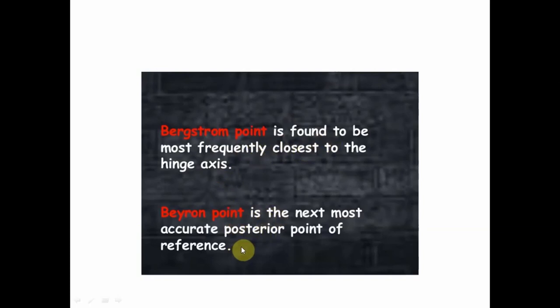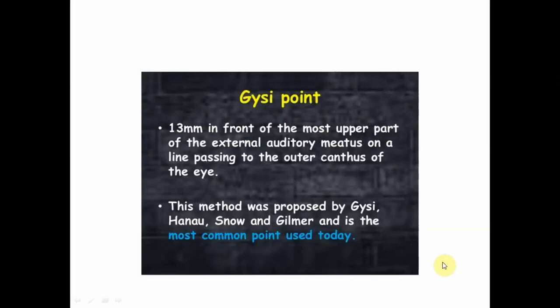Another posterior reference point is the Gysi point: 13 millimeters in front of the most upper part of the tragus of the ear on a line passing through the outer canthus of the eye. This is external auditory meatus-based reference, 13 millimeters on the most upper part of the tragus. This method was proposed by Gysi, Hanau, Snow, and Wilmer, and is the most commonly used point.